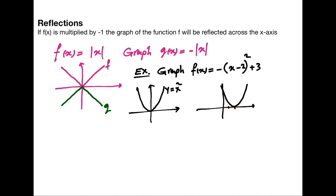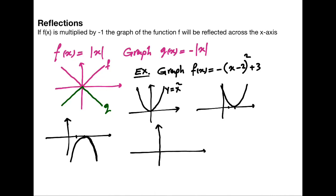Finally, 3 is added to the function, which is a vertical translation — we move the graph 3 units upwards. So the vertex of the parabola ends up at (2, 3), and the graph opens downward. That is the graph of f(x) = -(x-2)²+3.